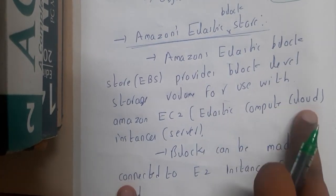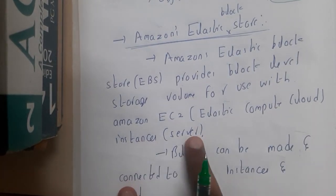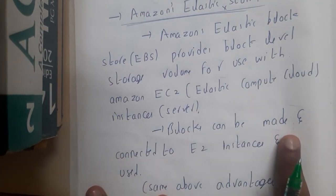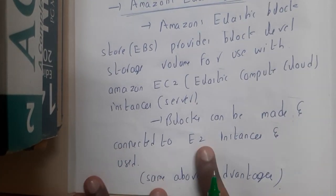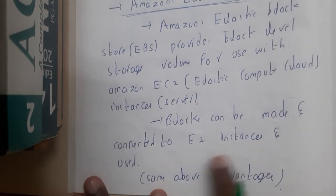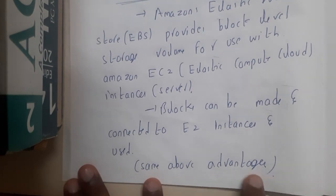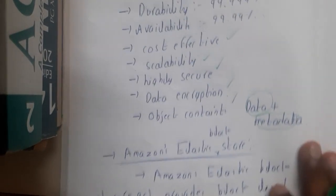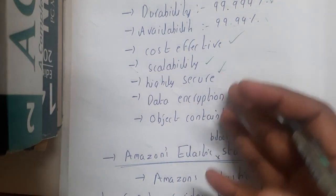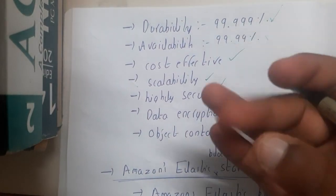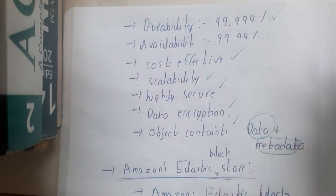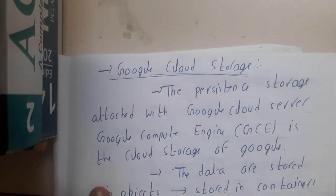Blocks can be created and connected to EC2 instances — the elastic cloud computing servers — and used accordingly. Basically any cloud storage will have the same advantages: encryption, durability, availability, scalability, and security.